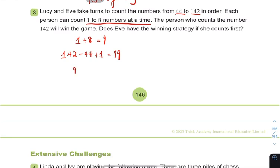When we are trying to divide 99 by 9, I can see that it is exactly going to be 11 groups. So, Eve does not have the winning strategy if she is going first, because whoever goes second has the winning strategy by forming 9s with the opponent.